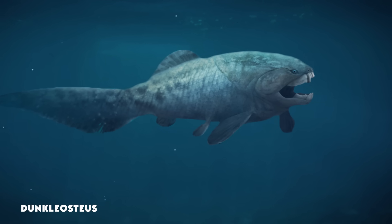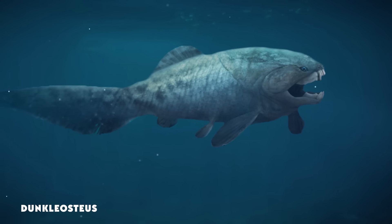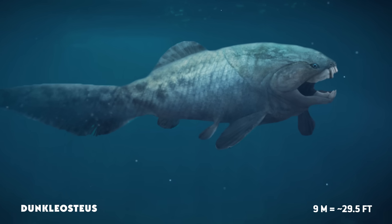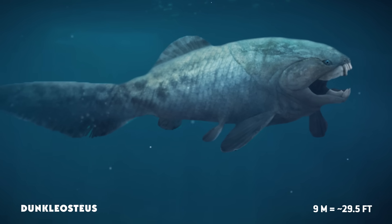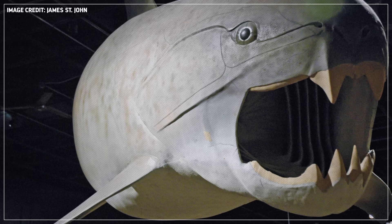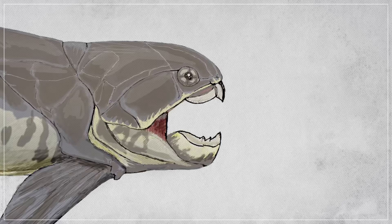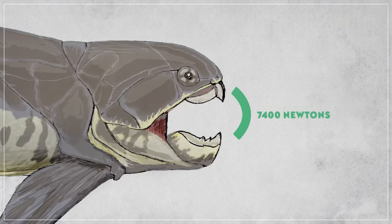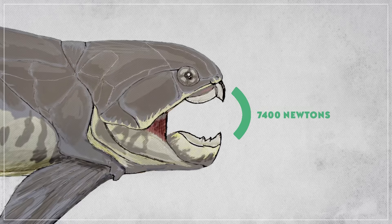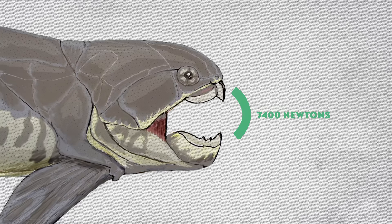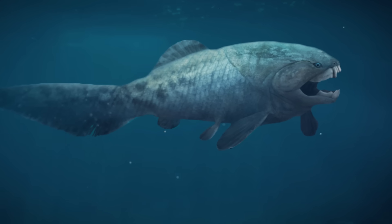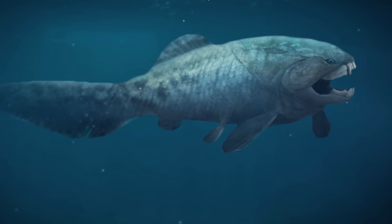Much bigger than Bothriolepis, and more carnivorous, was Dunkleosteus, a giant predator that could reach up to 9 meters in length with massive shearing jaws. It didn't have teeth either, but the sharpened sections of bone it used instead could have produced up to 7,400 newtons of force, making it one of the strongest bites of any fish living or extinct, and certainly the strongest bite in the world at the time.